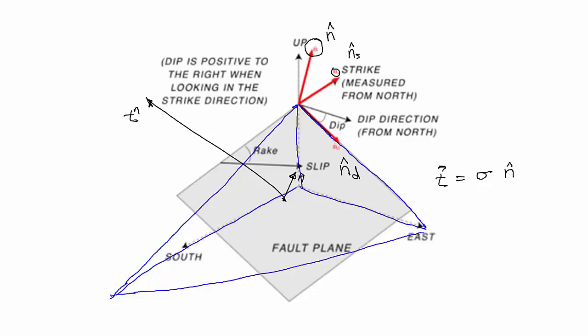It should be clear that there's an angle between the traction vector and the normal — it's not in the direction of the normal. It's oriented somewhat arbitrarily from the plane defined by the normal. So we have a stress vector arbitrarily oriented from the plane.